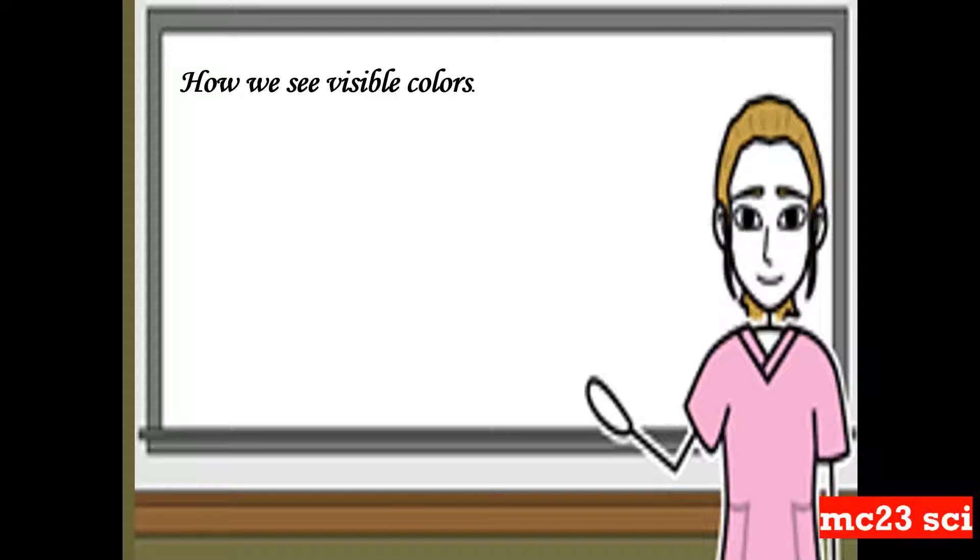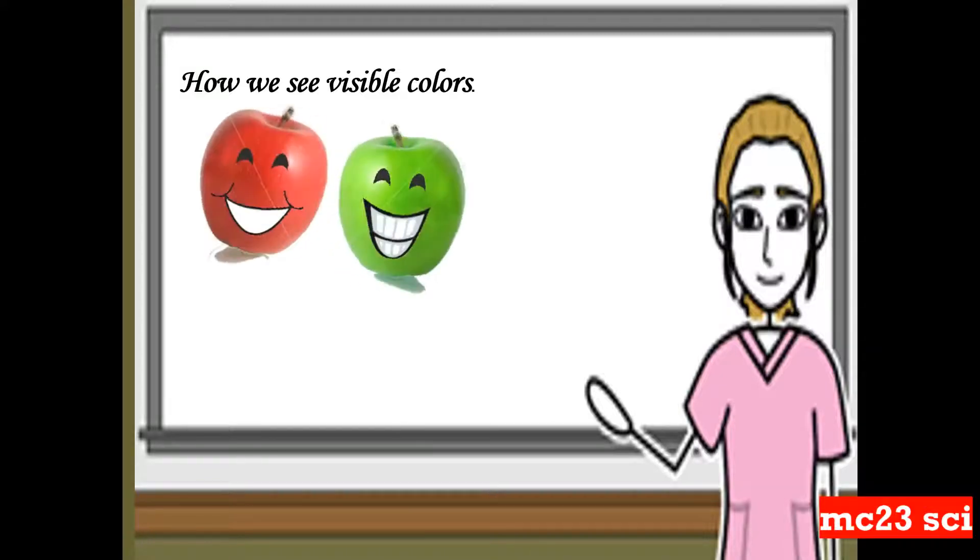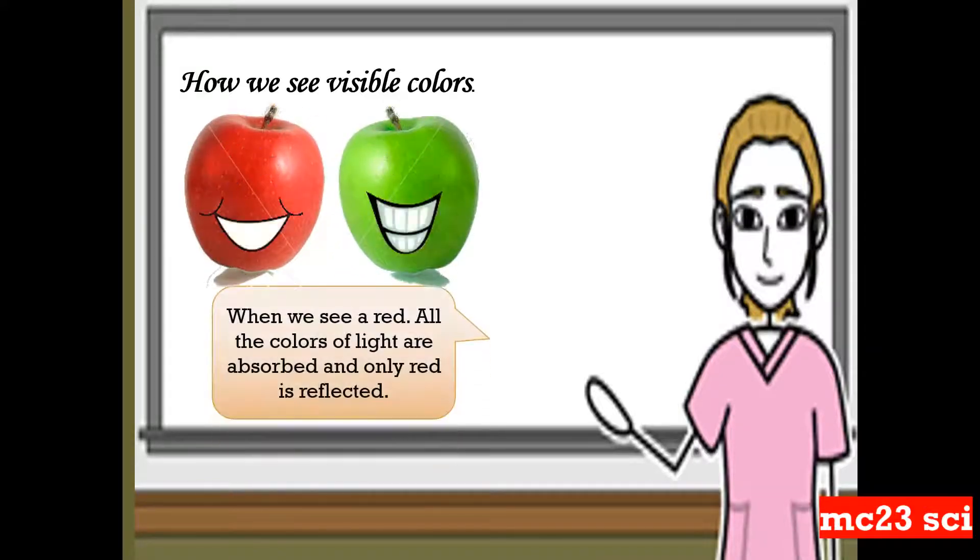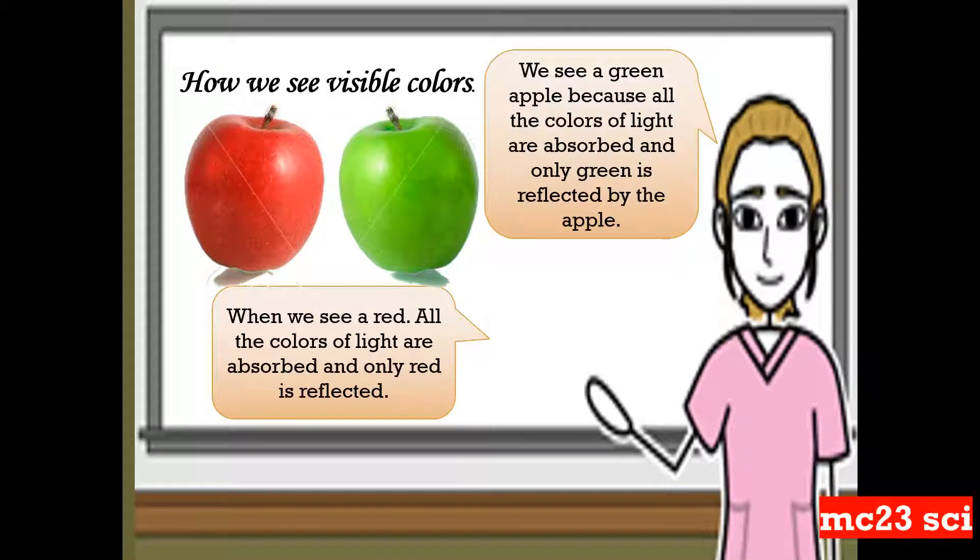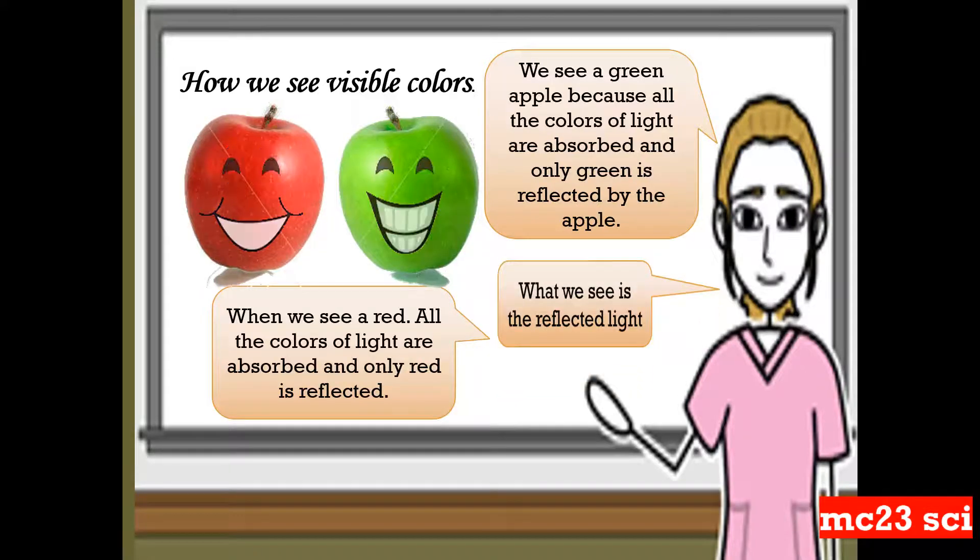How we see visible colors? Take a look at the picture. When we see a red, all the colors of light are absorbed and only red is reflected. So we see a green apple because all the colors of light are absorbed and only green is reflected by the apple. What we see is the reflected light.